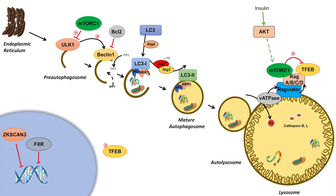When the cell is in a fasting state and the supply of energy substrates begins to decrease, AMP begins to increase. Once the cell begins to run out of ATP, AMP becomes elevated, and when AMP increases it activates AMP-activated protein kinase (AMPK). When AMPK is activated, it phosphorylates and activates ULK1.